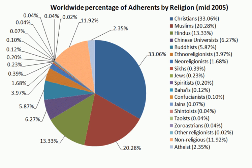Sikhism originated in 15th century Punjab — present-day India and Pakistan — with the teachings of Nanak and nine successive gurus. The principal belief in Sikhism is faith in Vaheguru, represented by the sacred symbol of Ek Oankar meaning One God. Sikhism's traditions and teachings are distinctly associated with the history, society and culture of the Punjab. Adherents of Sikhism are known as Sikhs and number over 27 million across the world.